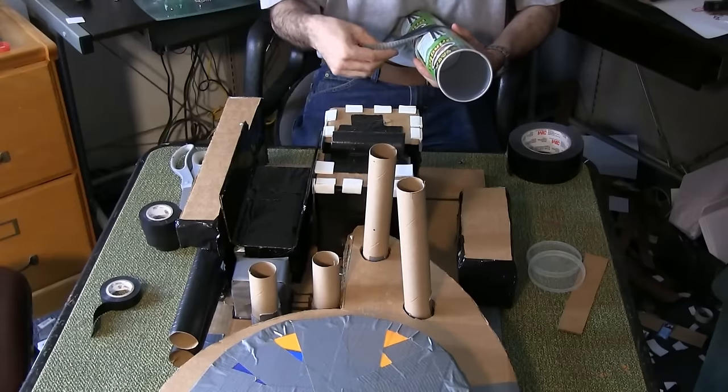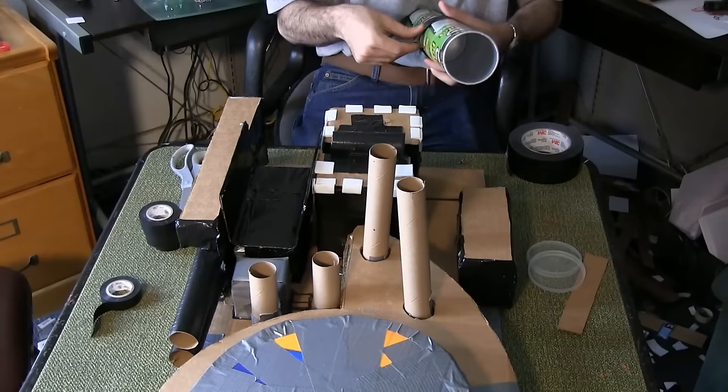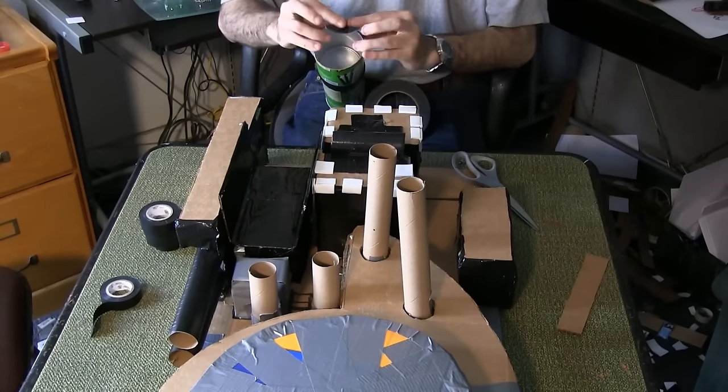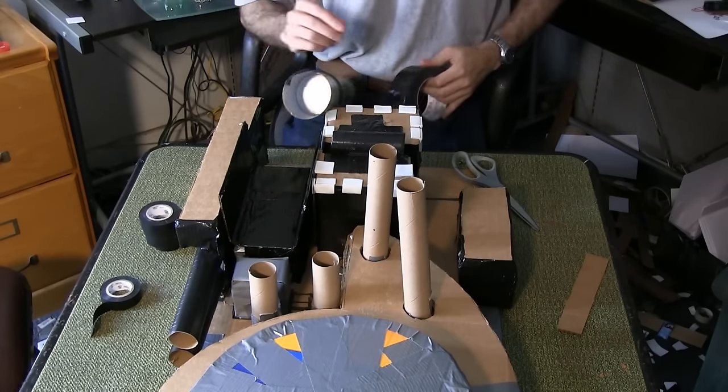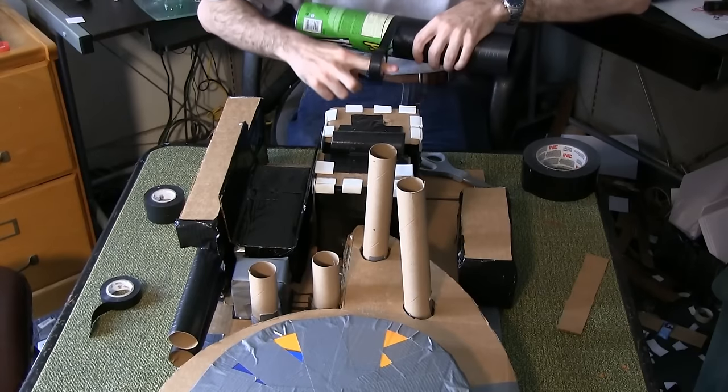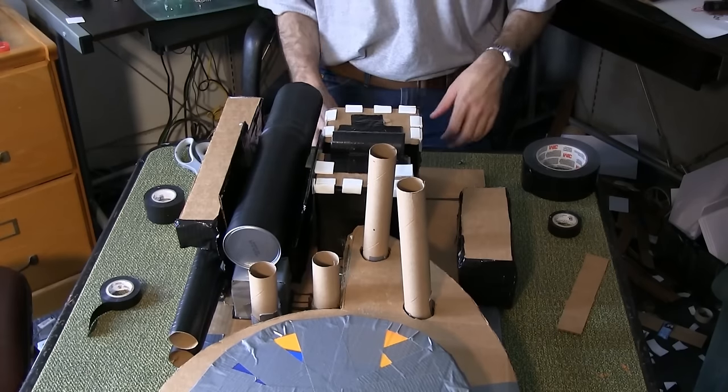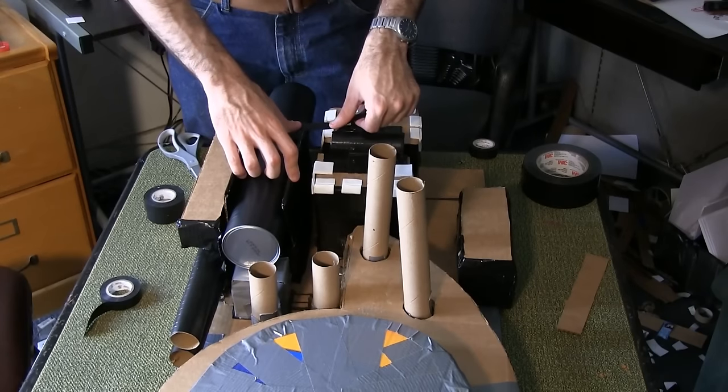Attach the two Pringles cans together with a length of black duct tape. Cut off the top 4 inches of the top Pringle can. Line the top of the connected cans with black duct tape. Wrap the connected cans in black electrical tape. Place the connected cans inside the section with the bottom on top of the section below. Connect the sides with lengths of electrical tape as shown.